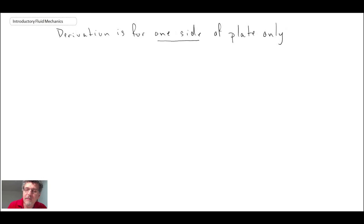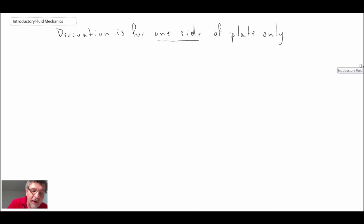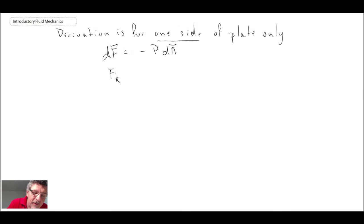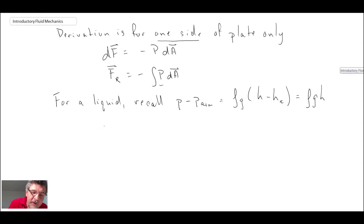We begin by writing out the differential force that would exist on our differential element. We can write dF as being the pressure at that location multiplied by the differential area. To get the resultant force, we integrate that across the entire plate. We know the pressure distribution from hydrostatics, so let's introduce that. We can write out the force using that pressure distribution.